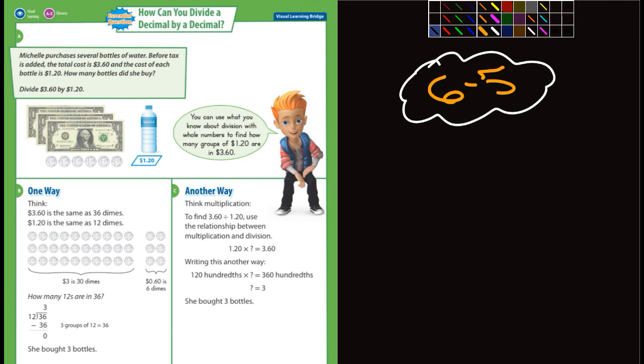It says Michelle purchased several bottles of water before taxes. The total cost is $3.60 and the cost of each bottle is $1.20. It says how many bottles did she buy? So you're dividing $3.60 by $1.20. I'll just set it up this way for a second here.